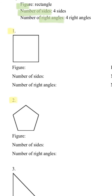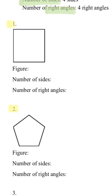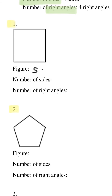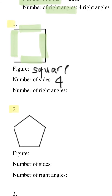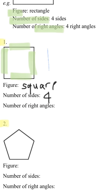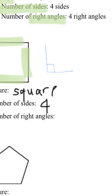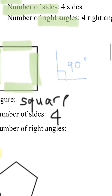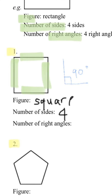Looking at number one, what is the figure? Hopefully you guys know the name — it is a square. How many sides does it have? It has one, two, three, four sides. And how many right angles does it have? A right angle is when it forms a 90 degree angle. So how many does it have? It has one, two, three, and four — so it has four right angles.